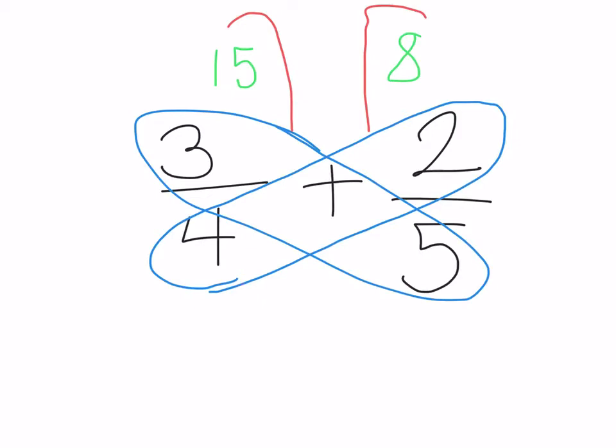Next, you would multiply the bottom two numbers down here. So 4 times 5 is 20, so you write that right there.